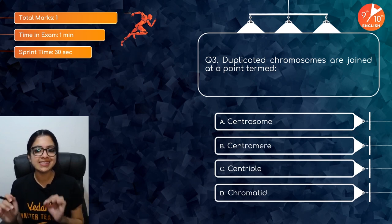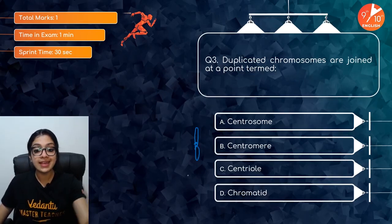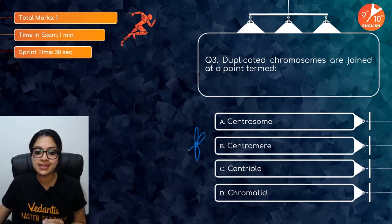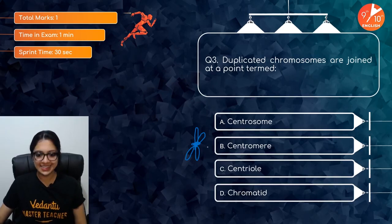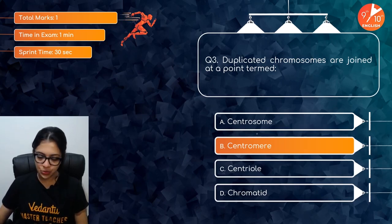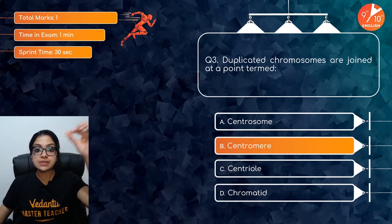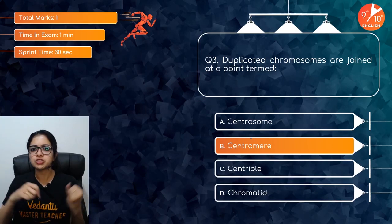Question 3: Duplicated chromosomes are joined at a point termed dash. During S phase, DNA replication happens and the chromosome gets duplicated. These duplicated chromosomes are held together at a point called the centromere. The centromere is also the structure at which spindle fibers attach during cell division.